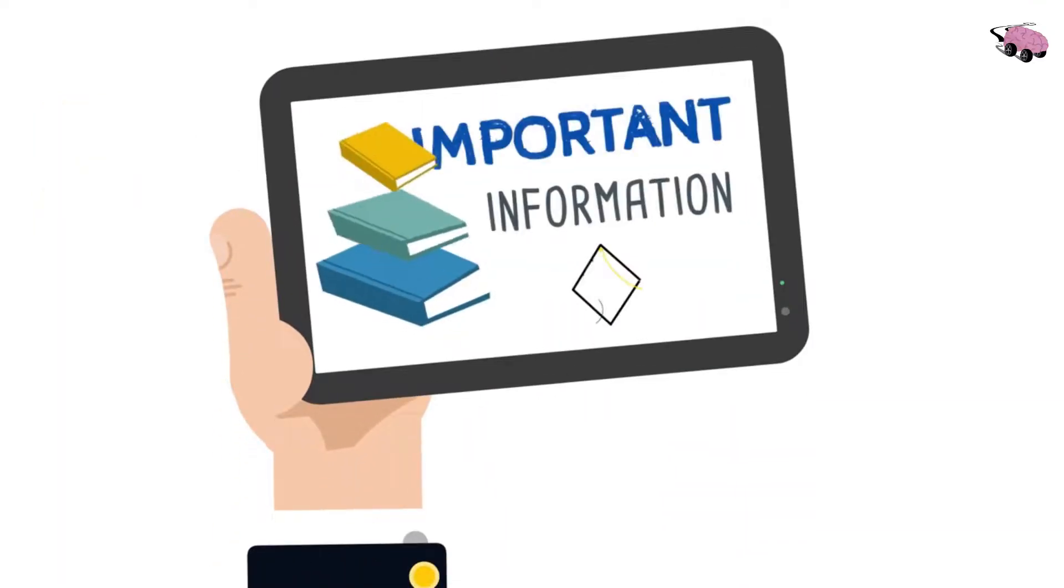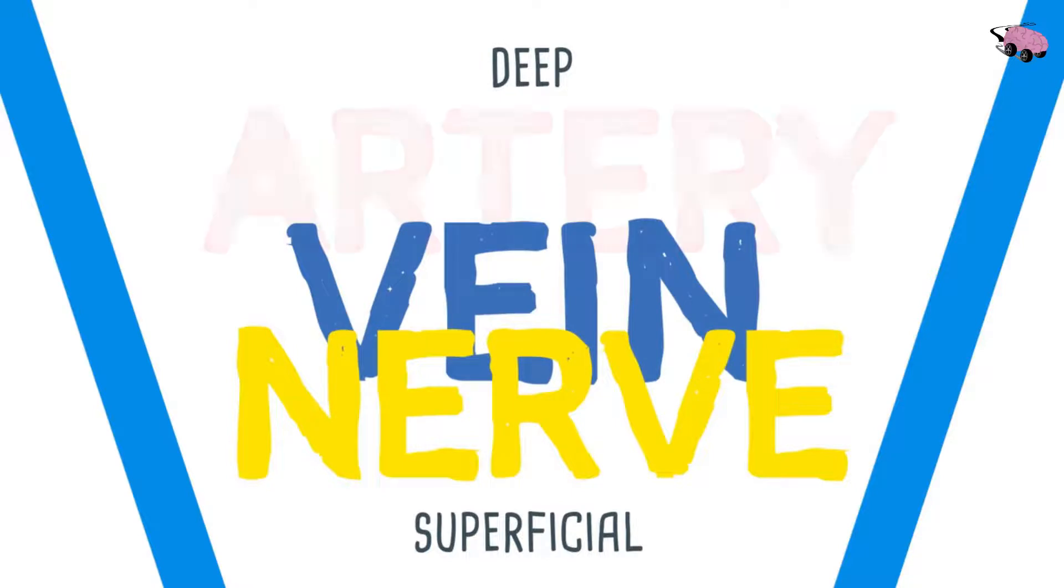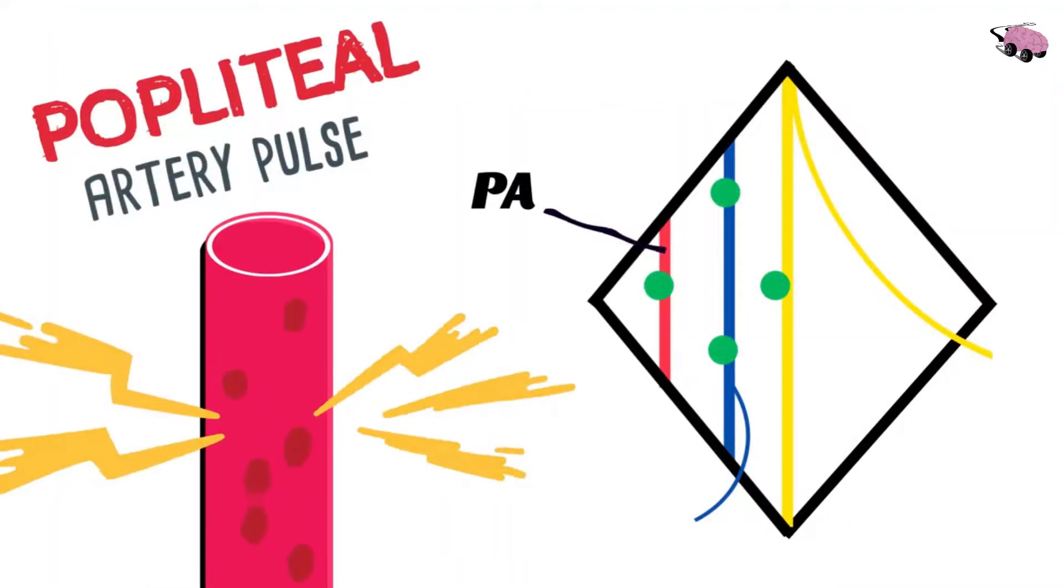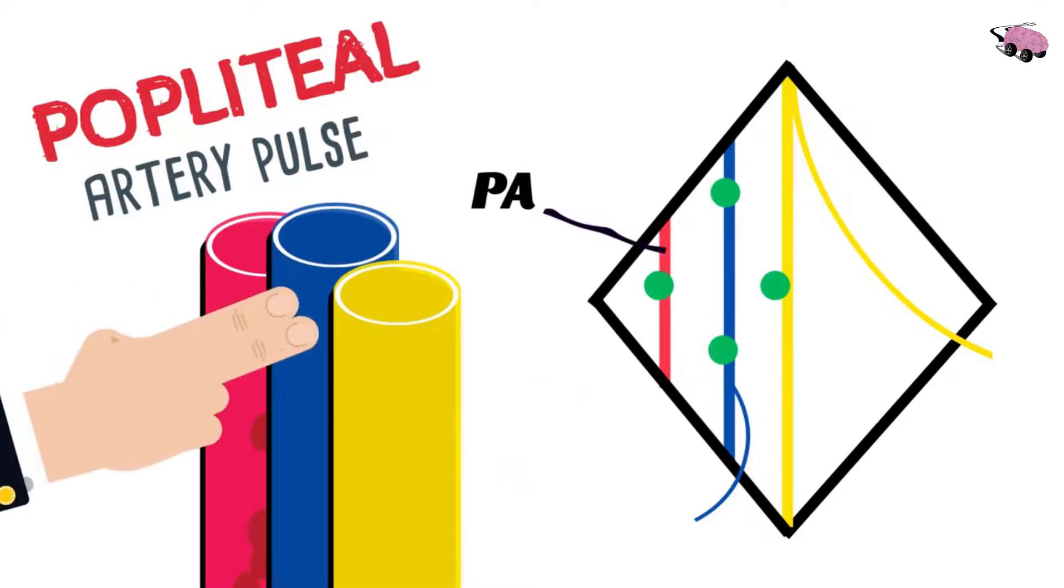Now hang in there for some important information. The vessels are actually arranged according to depths, so most superficial we have the nerve, deeper is the vein, and deepest is the artery. Did you know that the popliteal pulse is actually a main passpoint of the arteries? But because of the arrangement, it's hard to palpate it.